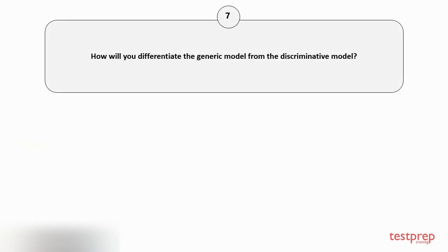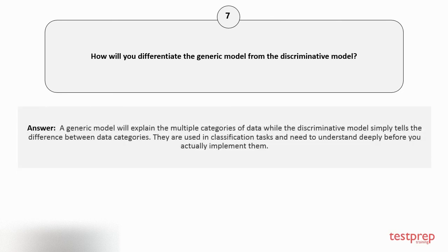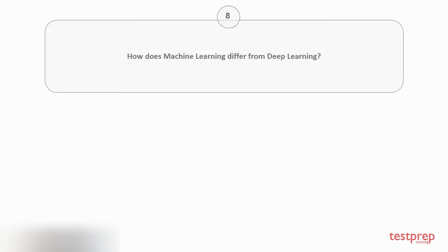Question number seven: How will you differentiate the generic model from the discriminative model? A generic model will explain the multiple categories of data, while the discriminative model simply tells the difference between data categories. They are used in classification tasks and need to be understood deeply before you actually implement them.